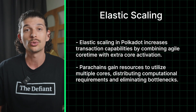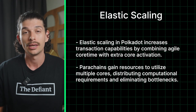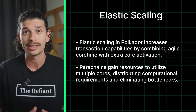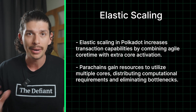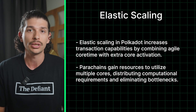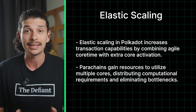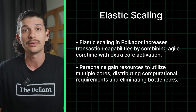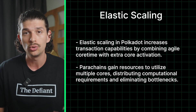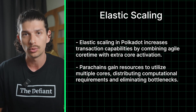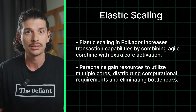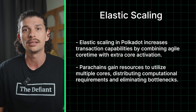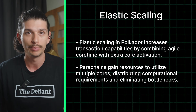Finally, let's talk about elastic scaling. It primarily increases Polkadot's transaction capabilities by combining the power of agile core time and activating extra cores. This is done by giving parachains the resources to utilize multiple cores, which distributes the necessary computational requirements and eliminates potential bottlenecks.